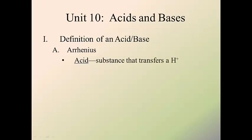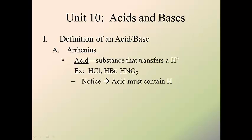The Arrhenius definition basically says that all acids are considered an H-plus transfer. So all acids, like HCl, HBr, and HNO3, have to have the ability to transfer an H-plus. That does not mean every compound that has hydrogen can be an acid. Methane, CH4, is obviously not an acid because you can't transfer the H-plus. Notice that all your acids must contain hydrogen.